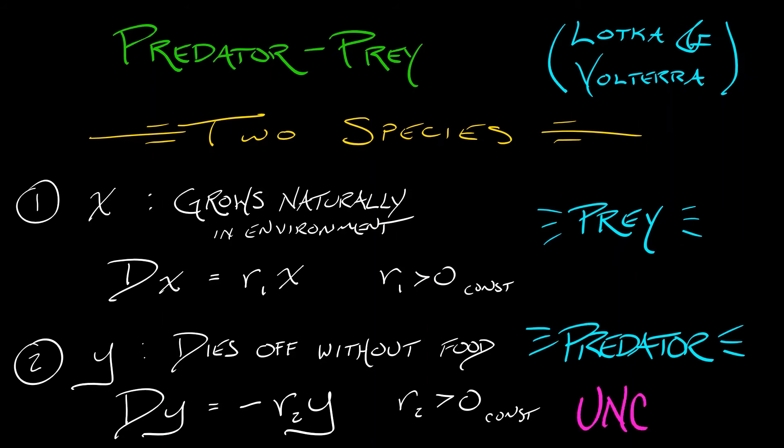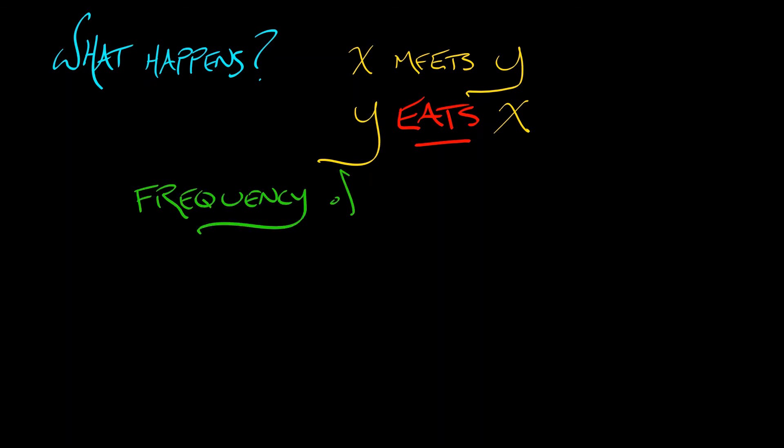Now this system, as written, is uncoupled and boring. x gets big and y dies off. What happens next? Well, x meets y and y eats x. And the question is, how often does that happen? One way to model this is to say that encounters between x and y are random, but their frequency is proportional to the product xy. If there aren't many x's or many y's, there won't be a lot of meetings. But if both are large, there's going to be quite a bit.